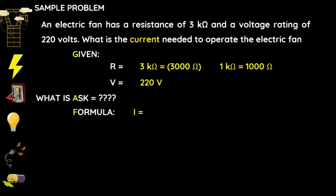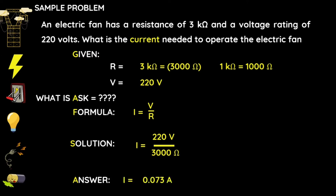The formula is: current equals voltage divided by resistance. For our solution, we have 220 volts divided by 3,000 ohms. Our answer is 0.073 amperes. So with 3 kilo-ohms (3,000 ohms) for resistance and 220 volts for voltage, dividing voltage by resistance gives us 220 ÷ 3,000 = 0.073 amperes. The current needed to operate the electric fan is 0.073 amperes.